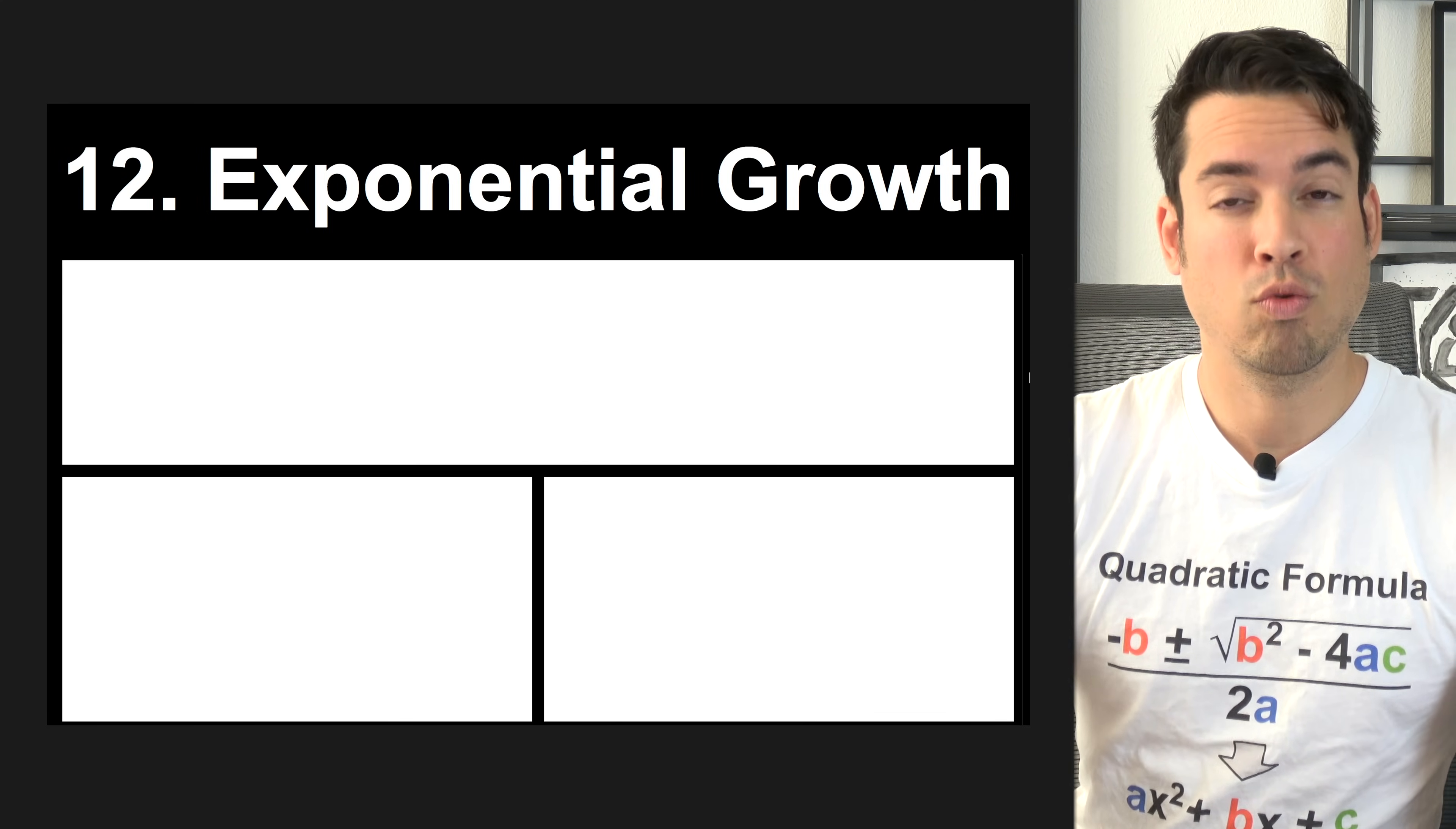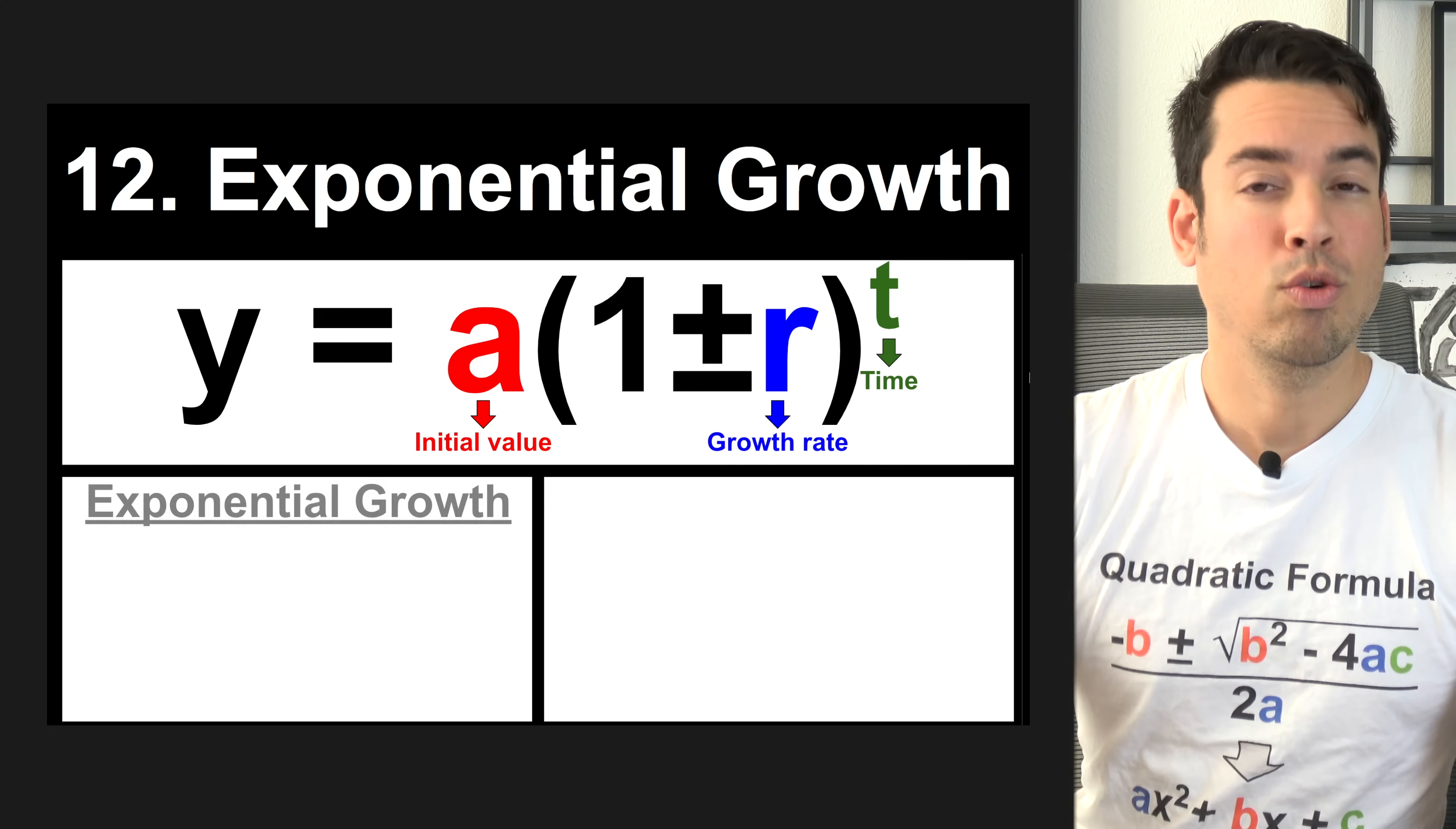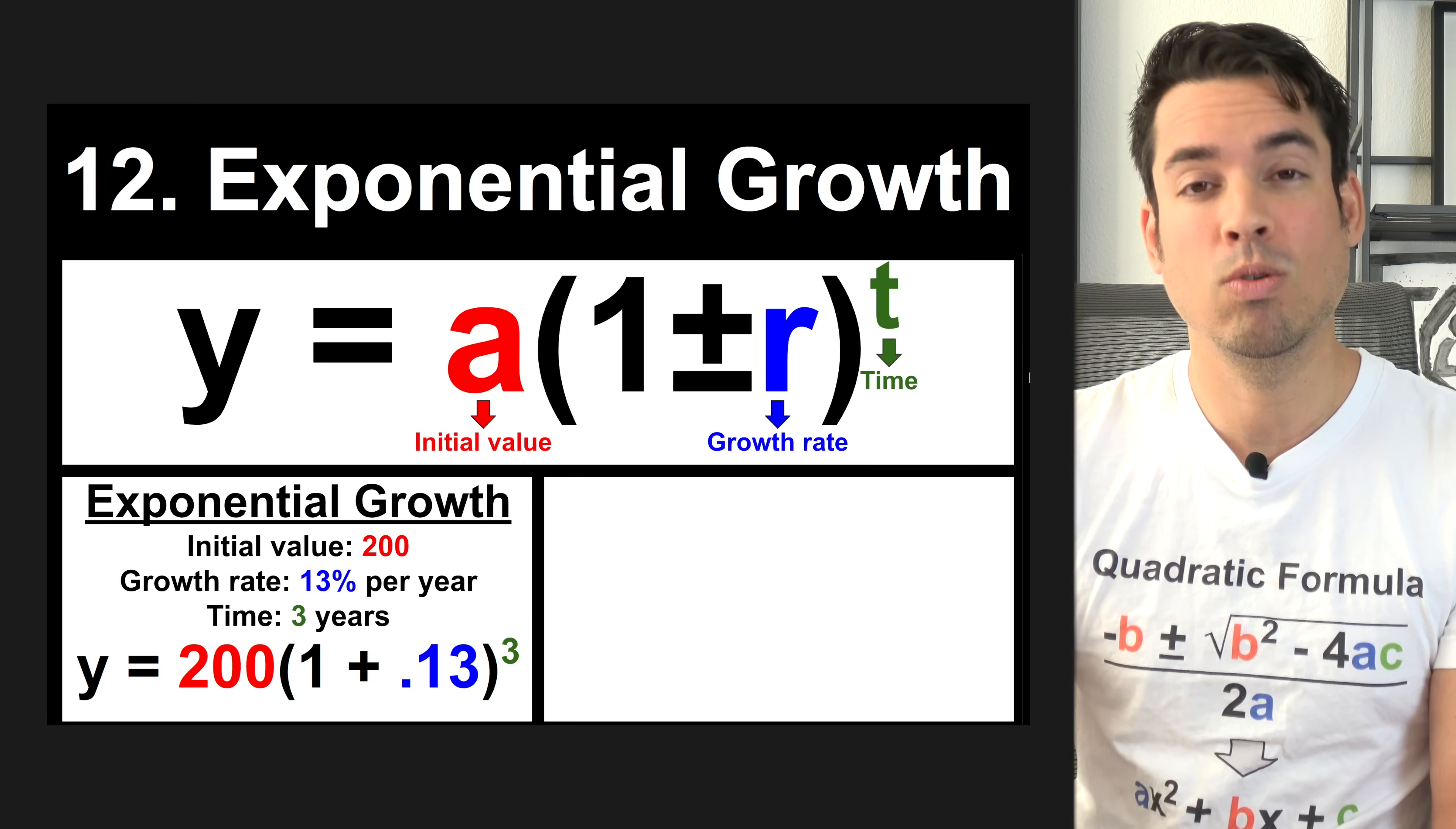Next, we have the formula for exponential growth, and this also encompasses exponential decay as well. It is y equals A times 1 plus or minus r to the t power, where A represents the initial value, r represents the growth rate, and t represents time, which is usually years. Here's a quick example for exponential growth. We have an initial value of 200, a growth rate of 13% over a time span of three years. When we plug everything into the formula, it looks like this. Notice you have 1 plus 0.13, which means the percentage is going in in the decimal format.